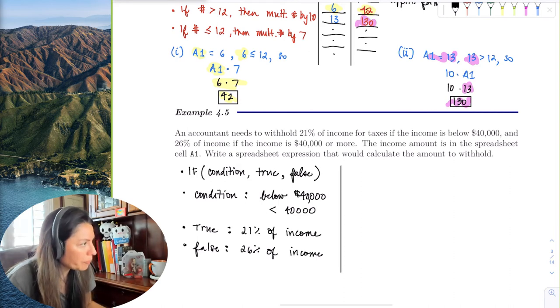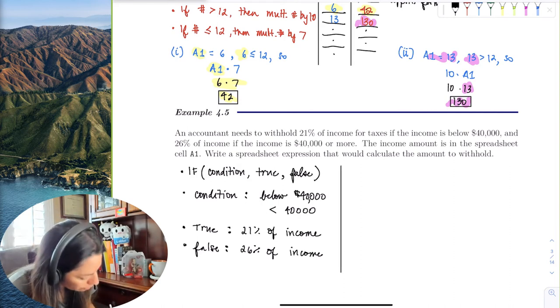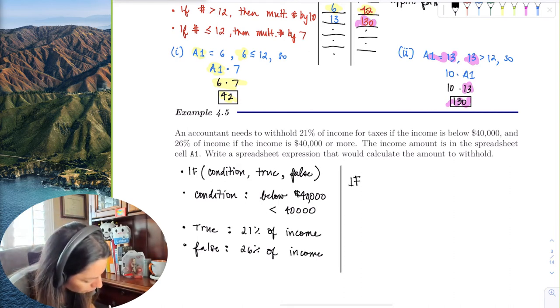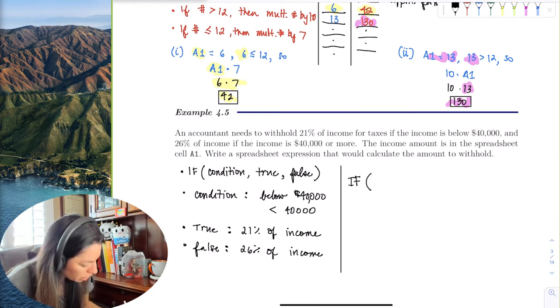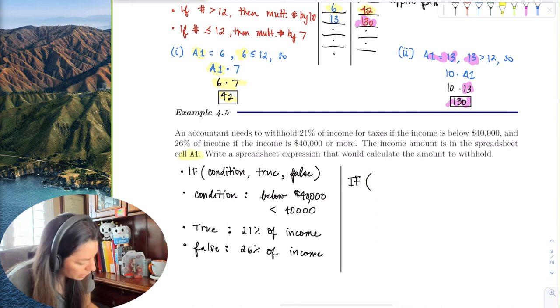Okay, so we would say IF, parenthesis, the condition is if the cell A1 is the income. Then we say A1 is less than the $40,000—that was the condition.